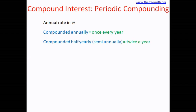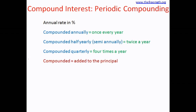If they say compounded half-yearly or semi-annually, the interest is calculated twice a year. Compounded quarterly means after every three months, so it is calculated four times a year. 'Compounded' means the interest is calculated and added to the principal. The period after which this is done is called the conversion period — 12 months for annual, 6 months for semi-annual.